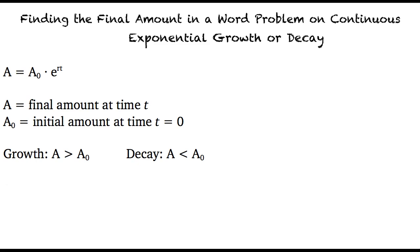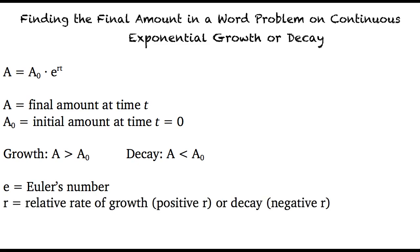e refers to Euler's number, which is a constant value available on the graphing calculator. r represents the relative rate of growth or decay. If the problem describes exponential growth, then r will be greater than zero, and if the problem describes exponential decay, then r will be less than zero. And lastly, t represents time.